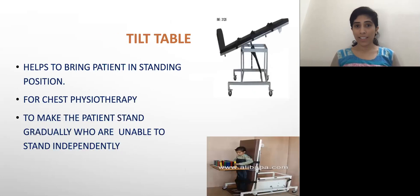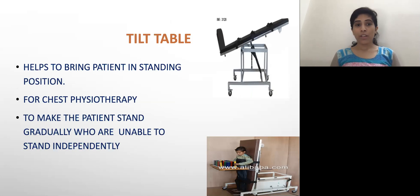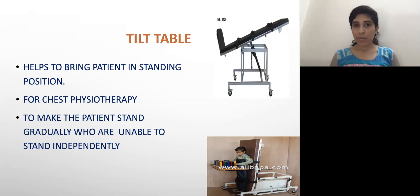It is called a tilt table. It helps to bring the patient into the standing position. It is used for chest physiotherapy. It also helps patients who are unable to stand independently to stand in a gradual manner. After making the patient stand, we can give various upper extremity exercises so that upper extremity exercises are done along with standing.